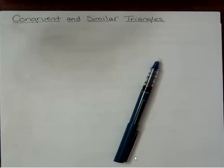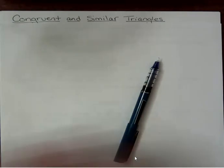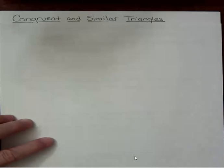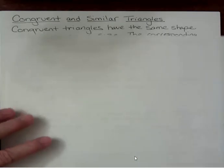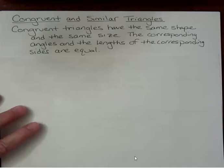Hello, Carly McEvoy here. Today I'm talking about congruent and similar triangles. They're two different concepts but they're related. So congruent triangles have the same shape and the same size. The corresponding angles and the lengths of the corresponding sides are equal.